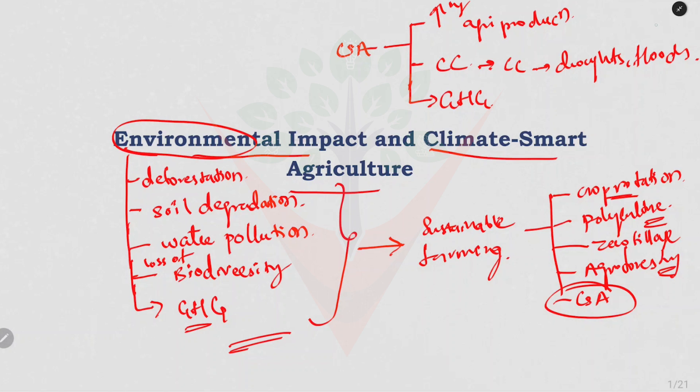For example, in India, scientists are developing climate resilient seed varieties that require less water and are more resistant to diseases, helping farmers maintain productivity despite changing climate conditions.